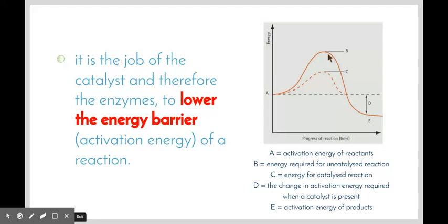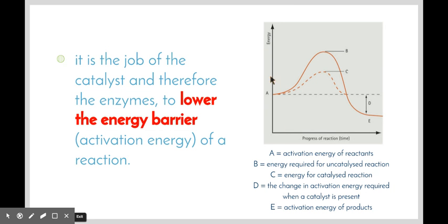As we can see here in this graph, we have two lines. B shows us the amount of energy required for an uncatalyzed reaction to take place, whereas the dotted line C shows us how much energy is required for a catalyzed reaction to take place. We start with the same amount of reactants and we finish with the same amount of product — we just reduce the amount of energy needed to get to the same point. So B requires a larger amount of energy for the reaction to proceed versus C, which is our catalyzed reaction.